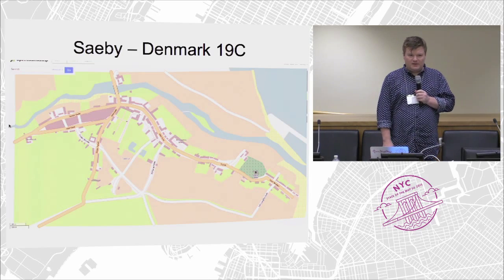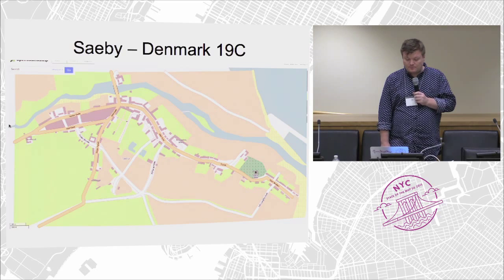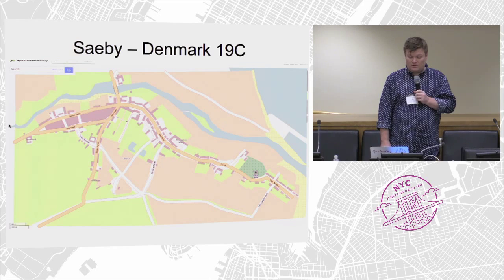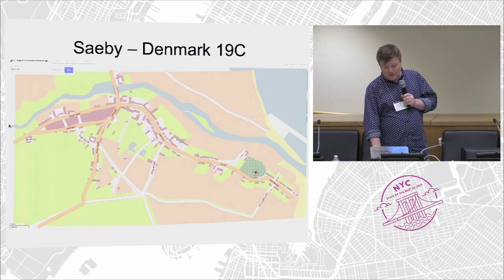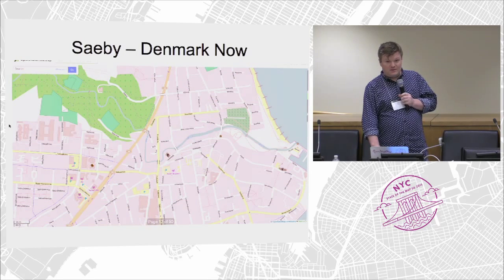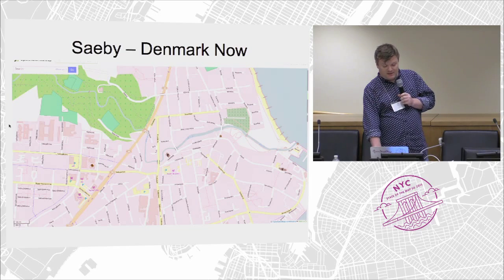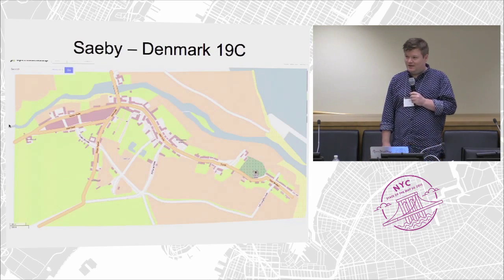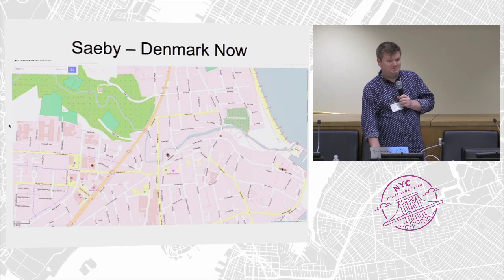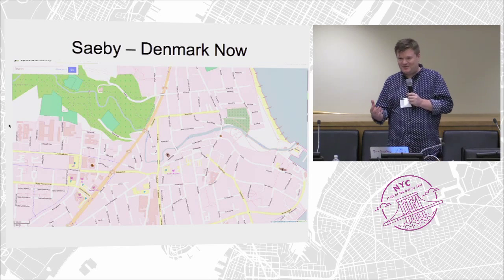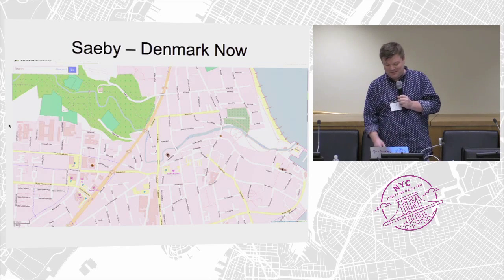In Denmark, in the northeastern part, a mapper has mapped the houses, roads, and streets around this area as they were in the 19th century. Comparing to OpenStreetMap — it's slightly zoomed out — you might be able to tell that there were more houses in Open Historical Map than currently exist in OpenStreetMap. So there's more mapping of houses that used to exist.